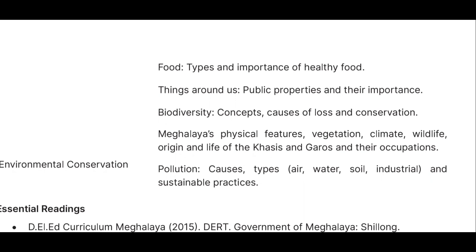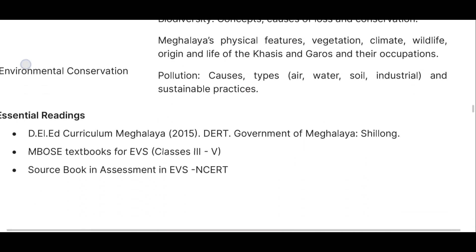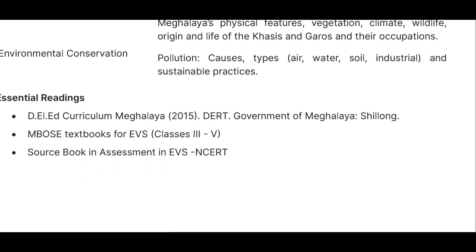Unit 7 is Environmental Conservation, covering pollution — its causes and types including air, water, land, industrial, radioactive, and noise pollution — and sustainable practices. For study materials, you can refer to the DL8 Curriculum Meghalaya 2015, DERT Government of Meghalaya, NCERT textbooks of Classes 3 to 5, and the Source Book on Assessment in EVS by NCERT.